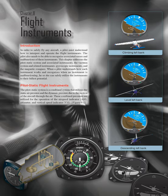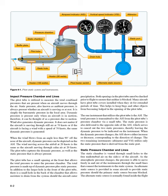Figure 8-1: Impact Pressure Chamber and Lines. The pitot tube is utilized to measure the total combined pressures present when an aircraft moves through the air. Static pressure, also known as ambient pressure, is always present whether an aircraft is moving or at rest — it is simply the barometric pressure in the local area. Dynamic pressure is present only when an aircraft is in motion; therefore, it can be thought of as a pressure due to motion. Wind also generates dynamic pressure. It does not matter if the aircraft is moving through still air at 70 knots or facing a wind of 70 knots — the same dynamic pressure is generated.